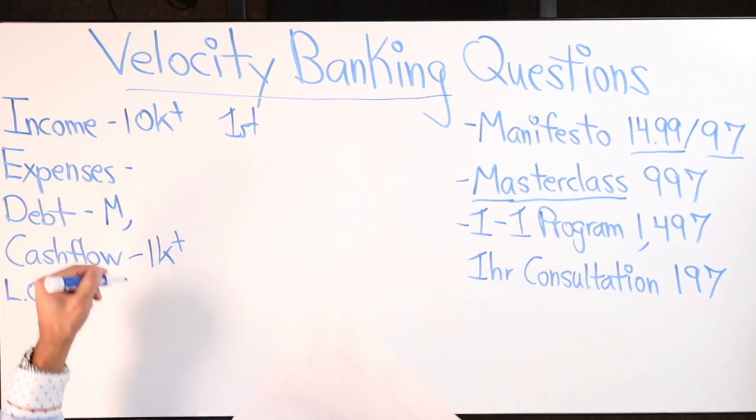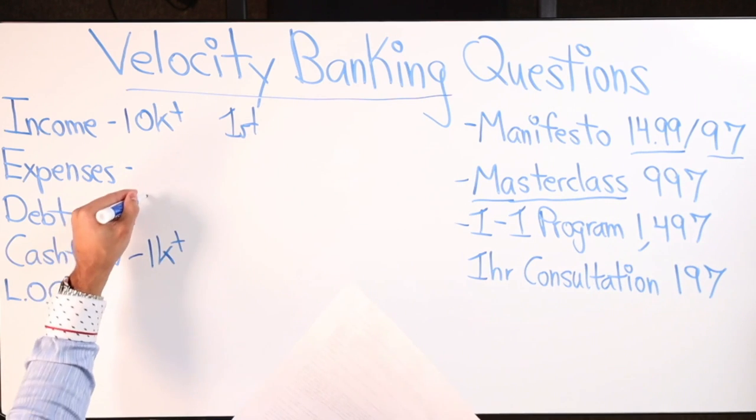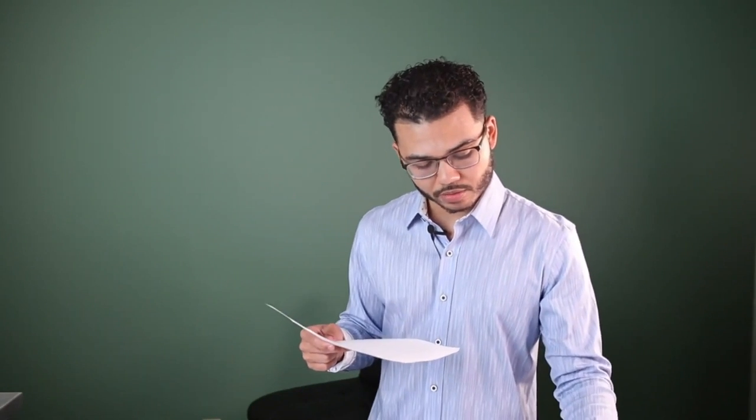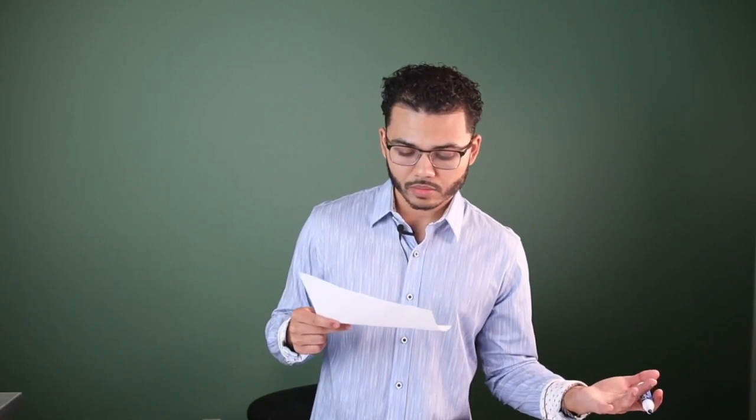Now what would make me say no even if you do have more than $10,000 in income and $1,000 plus in cash flow per month is the types of debts that you have. So Shakila says she has the mortgage debt and some credit cards. Let me read the rest of her question.